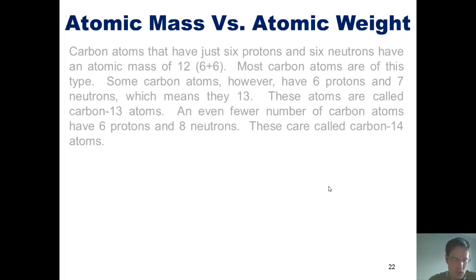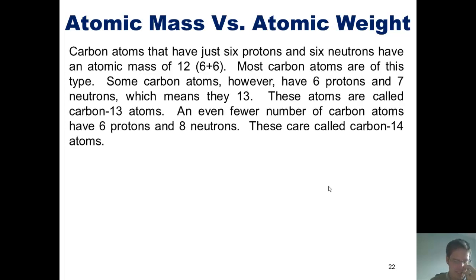Now, as I've said before, carbon atoms that have just 6 protons and 6 neutrons have an atomic mass of 12, which is 6 plus 6. Most carbon atoms are of this type.